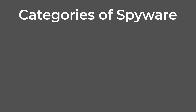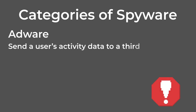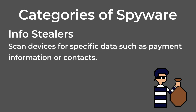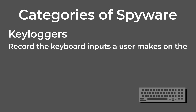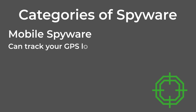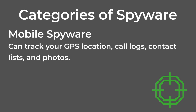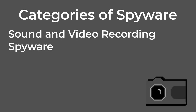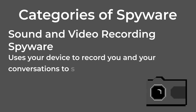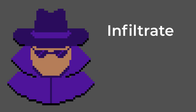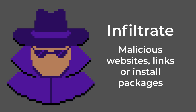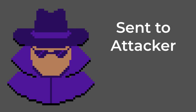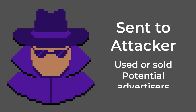The main categories of spyware are: Adware, which can send a user's activity data to a third party. InfoStealers, which can scan devices for specific data such as payment information or contacts. Keyloggers, which can record the keyboard inputs a user makes on the device. Mobile spyware, which can track your GPS location, call logs, contact lists, and photos. Password stealers, which harvest passwords and logins stored on an infected device. Sound and video recording spyware, which uses your device to record you and your conversations to send the information to a third party. Spyware will first infiltrate your device via malicious websites, links, or install packages, then monitor and capture your data. Finally, the stolen data will be sent to the attacker, where it will be used directly or sold to other parties, including potential advertisers.